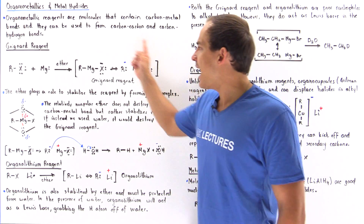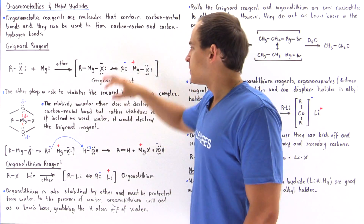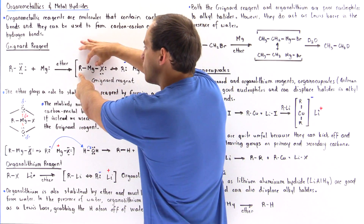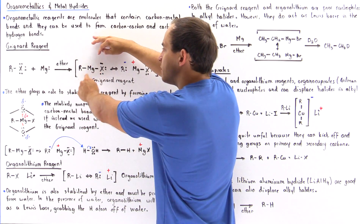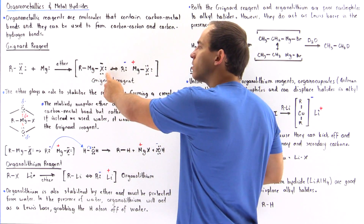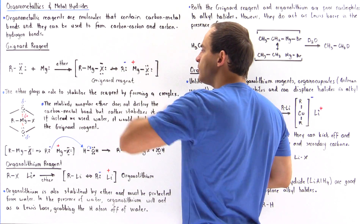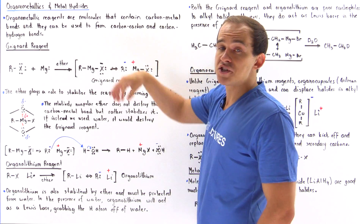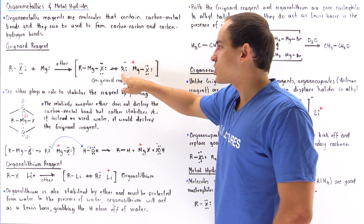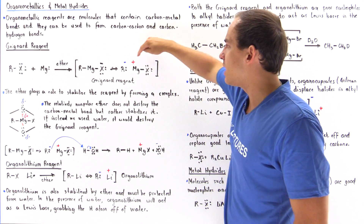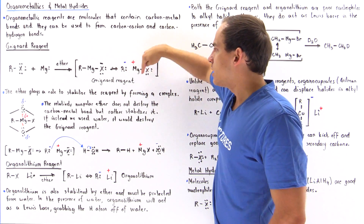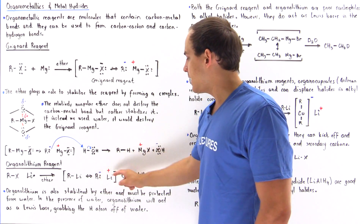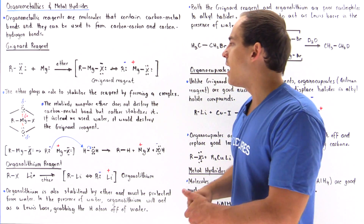Basically we have resonance stabilized structures. In this case, we have a bond between the carbon on the R group and our metal atom, the magnesium, and this magnesium is also bonded to our halogen. The second resonance stabilized structure shows us that because carbon on the R group is more electronegative than the magnesium, this carbon pulls away those electrons and bears a negative charge, while the magnesium bears a positive charge. Likewise, for organolithium, the carbon bears a negative charge and the lithium bears a positive charge.